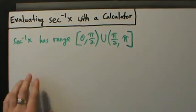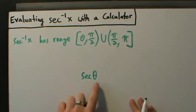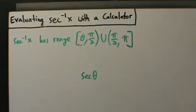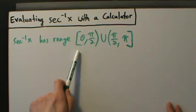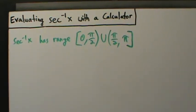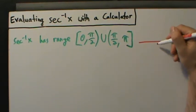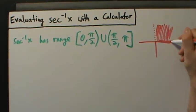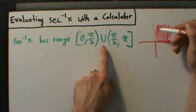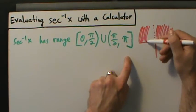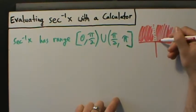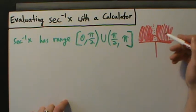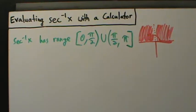We evaluate trig functions like secant of theta at angles and get a number as a result. With inverse trig, we evaluate at a number and get an angle. So if the result for inverse secant of x is between 0 and pi but not pi over 2, on the unit circle that looks like a shaded region from 0 up to — but not including — pi over 2, and then from pi over 2 to pi. So here's 0, here's pi over 2, and pi radians is all the way around. That's what the range of inverse secant looks like when interpreted as angles.